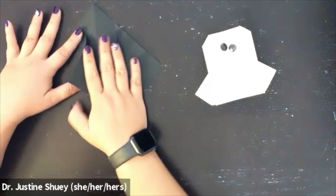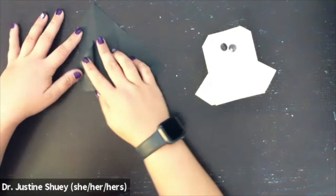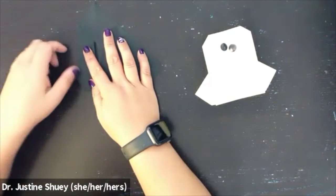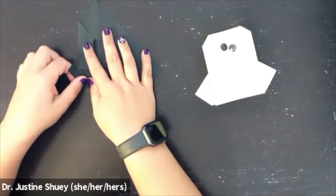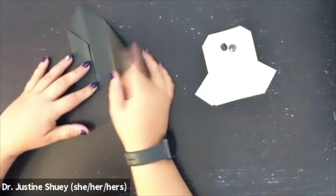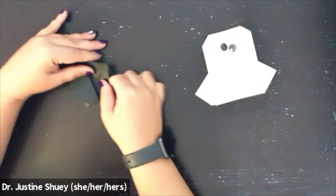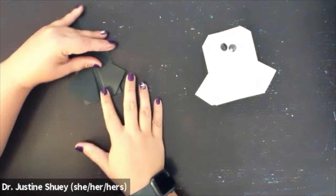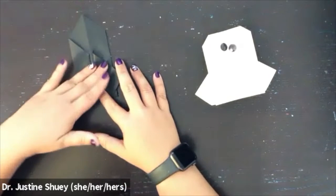And then we're going to fold the piece we just folded in back out a little bit to create wing flaps. So folding it back out so it's sticking out on the sides.